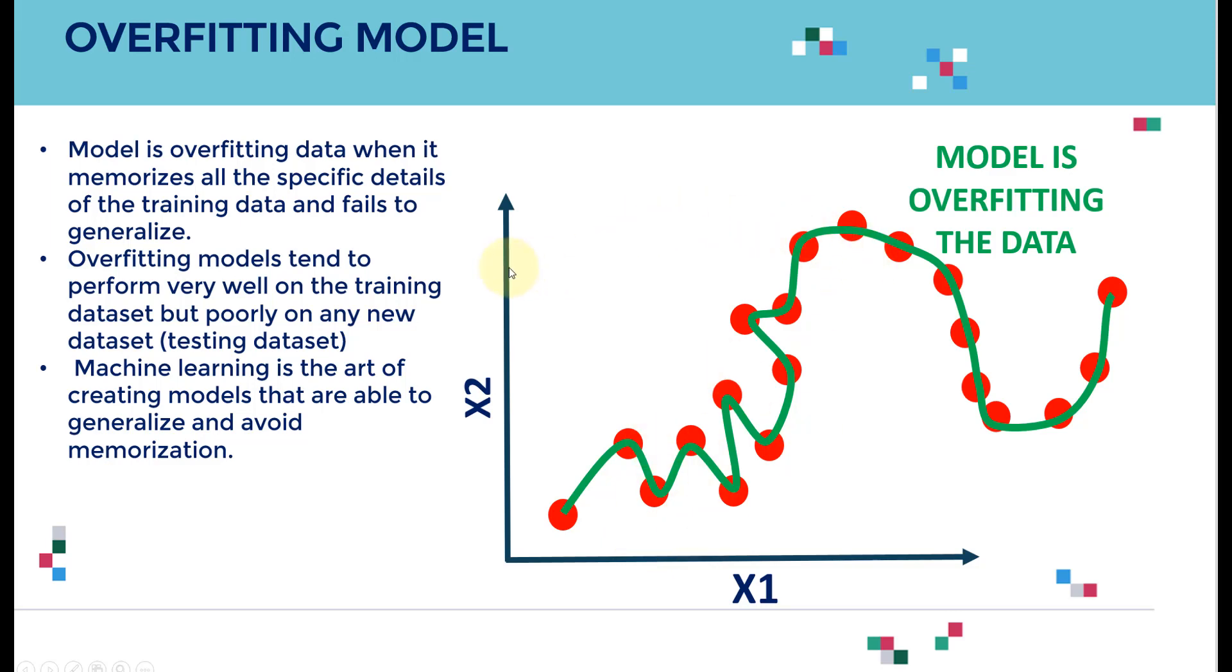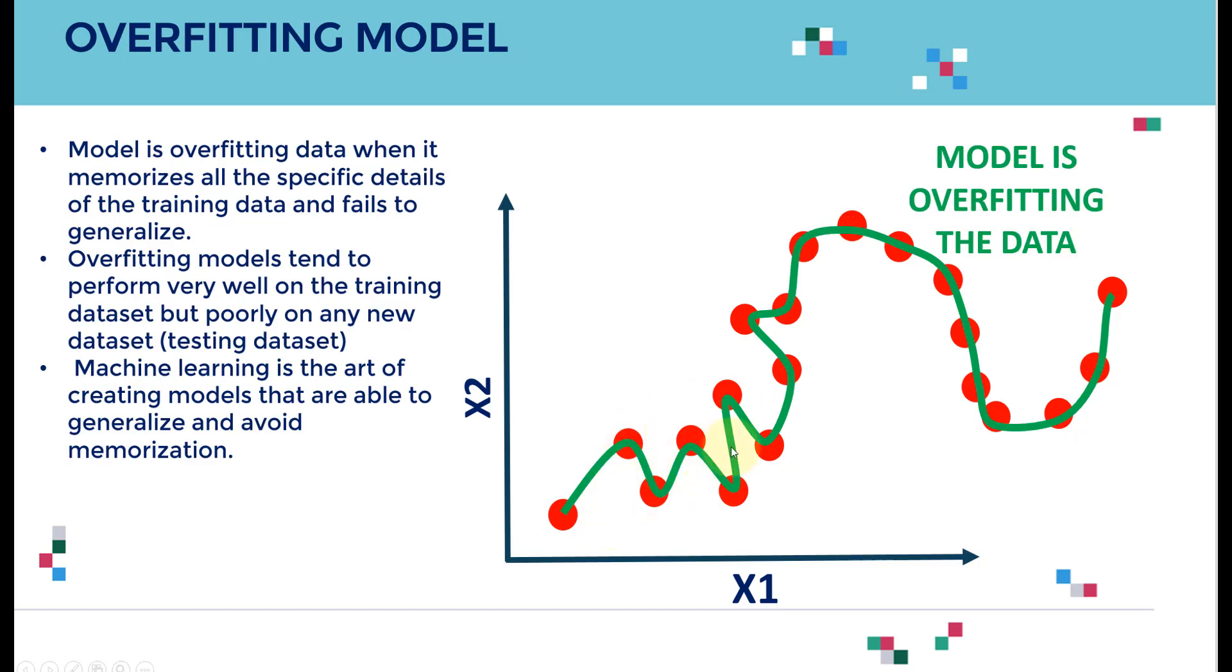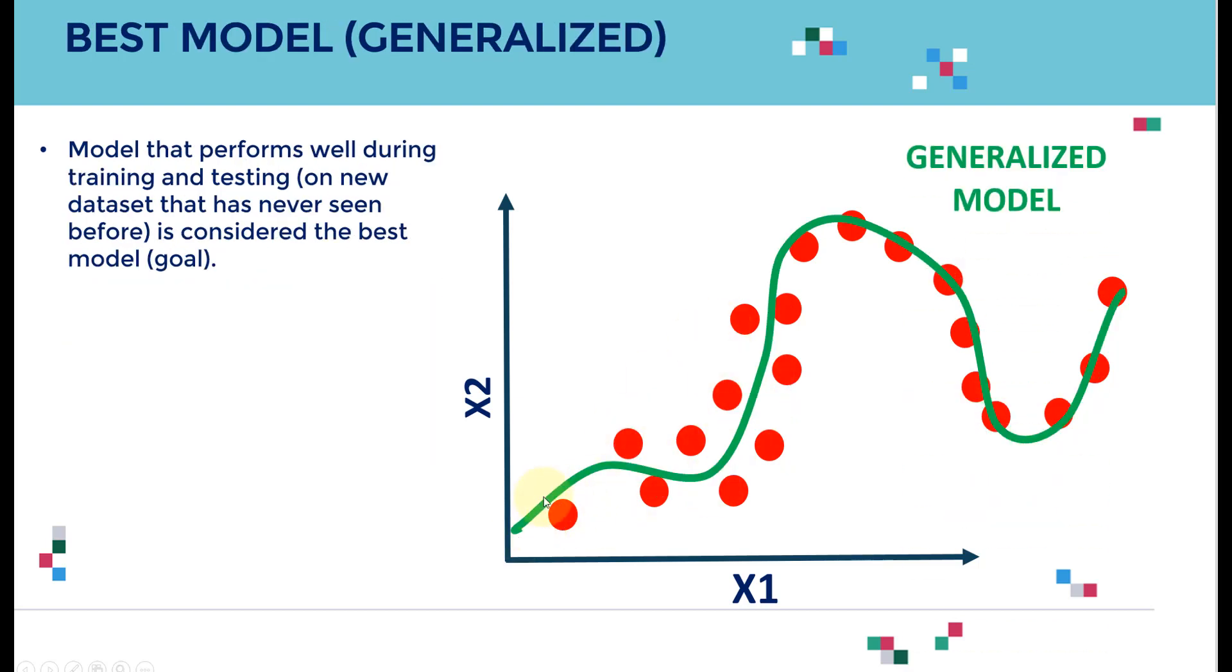Now let's look at the generalized model—the best model. If I have a model kind of in between, a smooth model that takes the shape of the training data but doesn't do all these windings we had before, we have a smooth fit. That's a little bit more of a generalized model—that's what we're looking for.